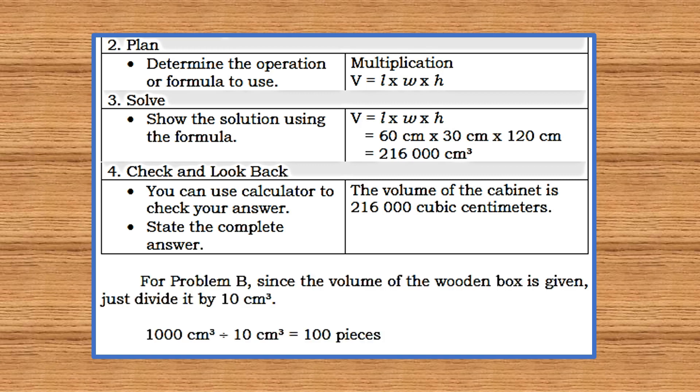And for letter B, or problem B, since the volume of the wooden box is given, just divide it by 10 cubic centimeter. 1,000 cubic centimeter divided by 10 cubic centimeter is equal to? Very good, kids. 100 pieces.